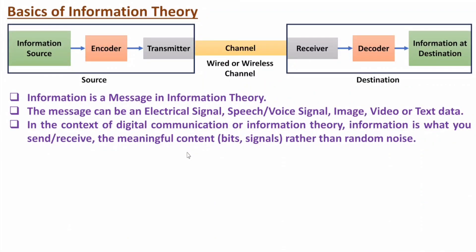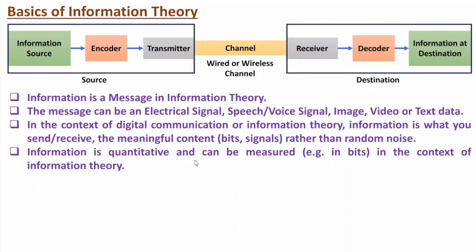In context of digital communication or information theory, information is what you send or receive. In a communication system, source is sending information and destination is receiving information via channel. Information is a message which we send or receive — it is meaningful content. Usually we represent that in terms of bits or signals rather than random noise. Information is quantitative and can be measured in terms of bits.